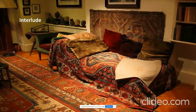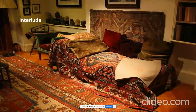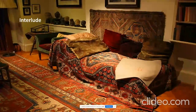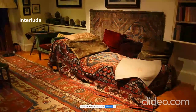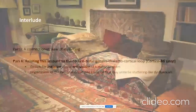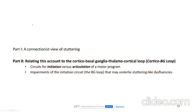Now we're moving into a more specific account where we'll associate particular brain regions to the different components of this model. In particular, we're going to focus on the corticobasal ganglia thalamocortical loop, which I'll call the cortical BG loop for short. We'll start by separating out two aspects of speech production: the processes of initiating a motor program and articulating that motor program.